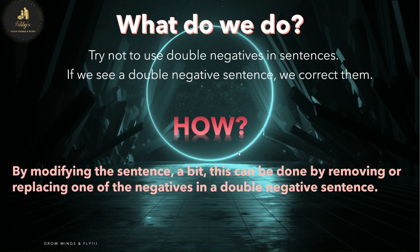How can we stop making such errors? Try not to use double negatives in sentences — this has to be a conscious effort on our part. If we see a double negative sentence, we correct it. How do we do that? By modifying the sentence a bit — this can be done by removing or replacing one of the negatives in a double negative sentence.